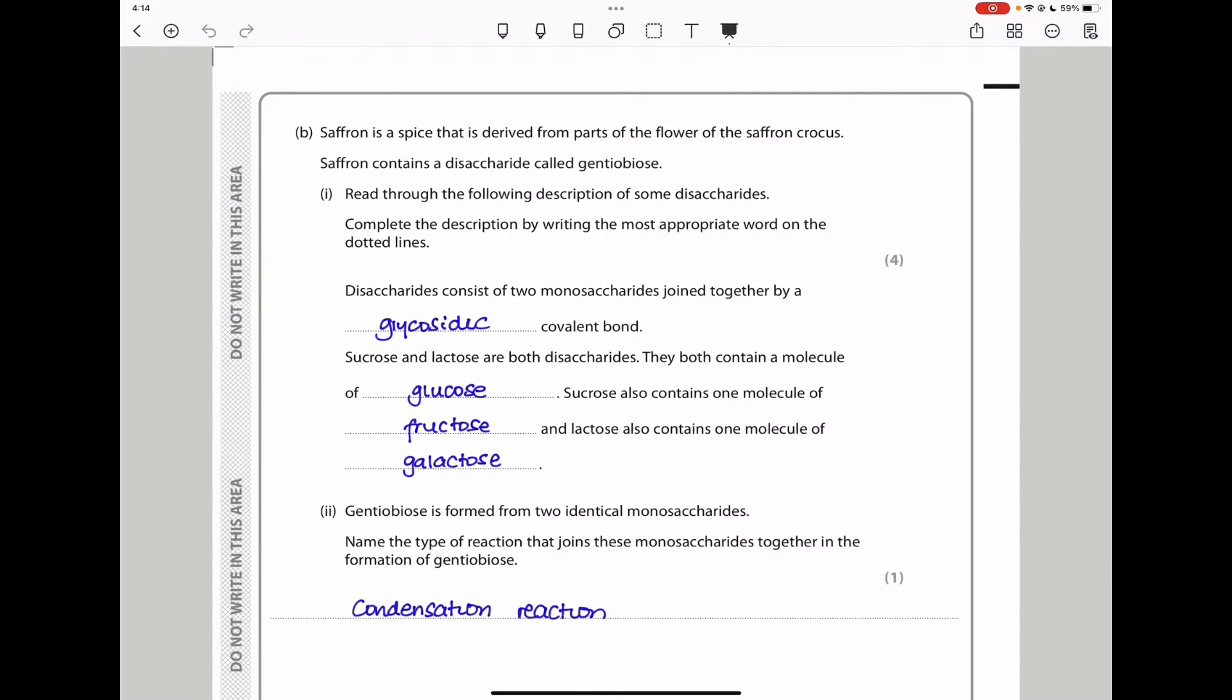So the two correct statements are this one and that one. The answer here should be C because only two statements are correct. Next part says saffron is a spice derived from the flower of the saffron crocus. Saffron contains a disaccharide called gentiobios. Complete the description by writing the most appropriate word on the dotted line. Disaccharides contain two monosaccharides joined together by a glycosidic covalent bond. Sucrose and lactose are both disaccharides. They both contain a molecule of glucose. Sucrose also contains one molecule of fructose and lactose contains one molecule of galactose.